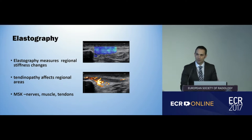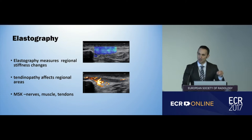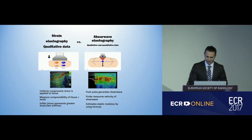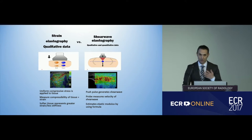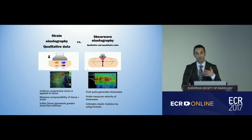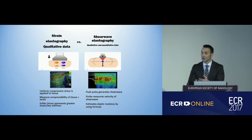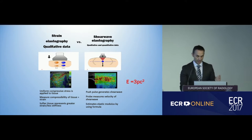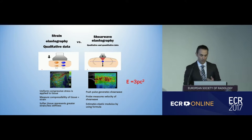One of the benefits of elastography is that we can measure these regional areas. I tend to use it for tendons, but other practitioners use it for muscles and nerves as well. There are two different types — strain elastography and shear wave elastography. The preference in MSK medicine is really shear wave elastography, because of not only its qualitative ability but also its quantitative ability to measure the elastic modulus of the tendon.